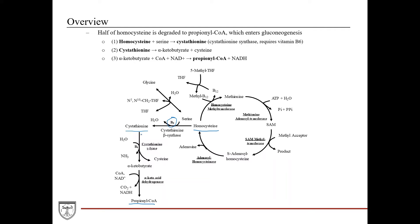From cystathionine, you convert it into alpha-ketobutyrate, carried out by the enzyme cystathionine lyase, which also uses vitamin B6. Then alpha-ketobutyrate is combined with CoA and NAD+, yielding propionyl-CoA and NADH. Remember, propionyl-CoA is then used in gluconeogenesis.